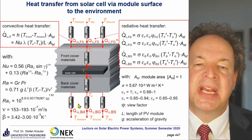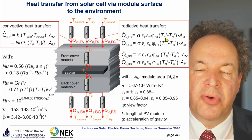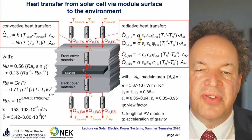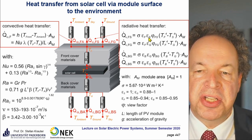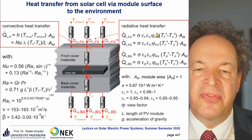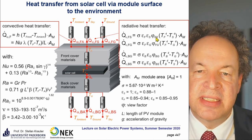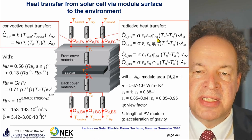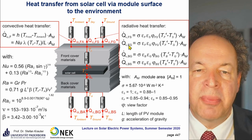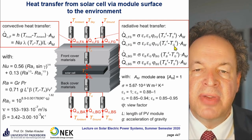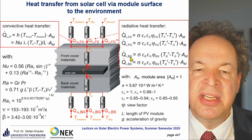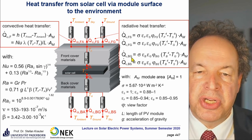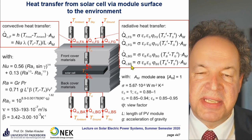For radiative heat transfer, the formula depends on temperature to the fourth power, the Stefan-Boltzmann constant sigma, and the emissivity of the front surface. Since it is a radiation exchange, we must also consider the emissivity of the sky and a view factor from front to sky. The same applies for radiation exchange from the front with the ground using ground temperature and the front-to-ground view factor. The same occurs on the backside: radiation exchange with ground and radiation exchange from the backside with the sky — all depending on the module elevation angle.